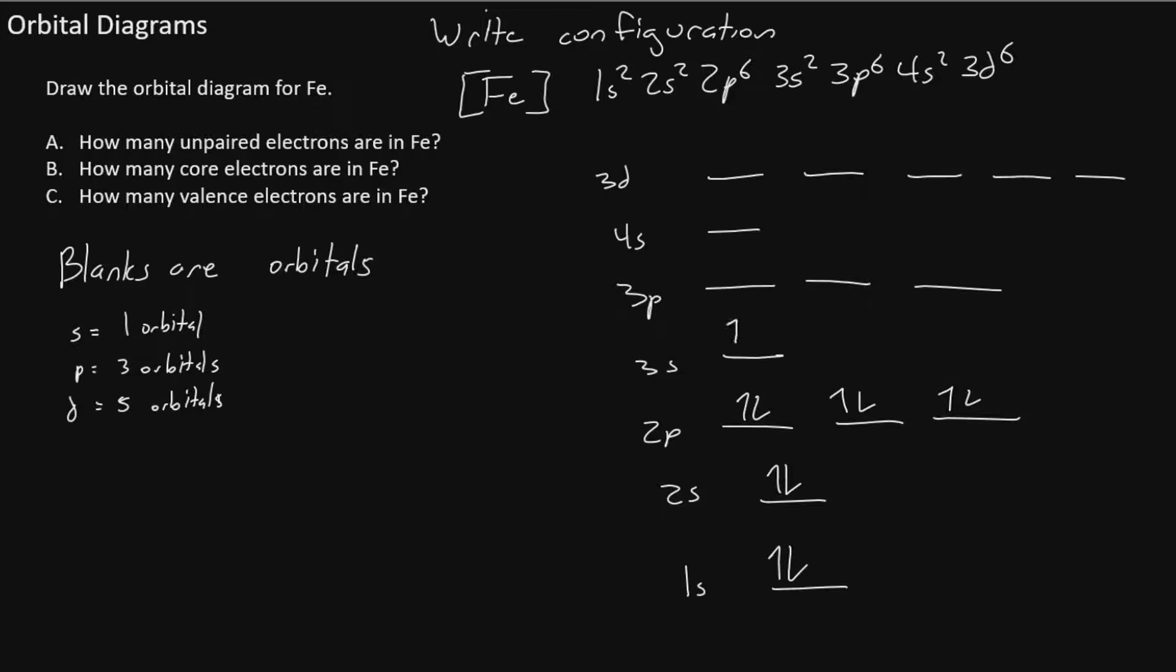3s2, again, two electrons in 3s. Six electrons in 3p. Two electrons in 4s. And then six electrons in 3d. Be careful when you fill the 3d. We don't pair unless we have to.